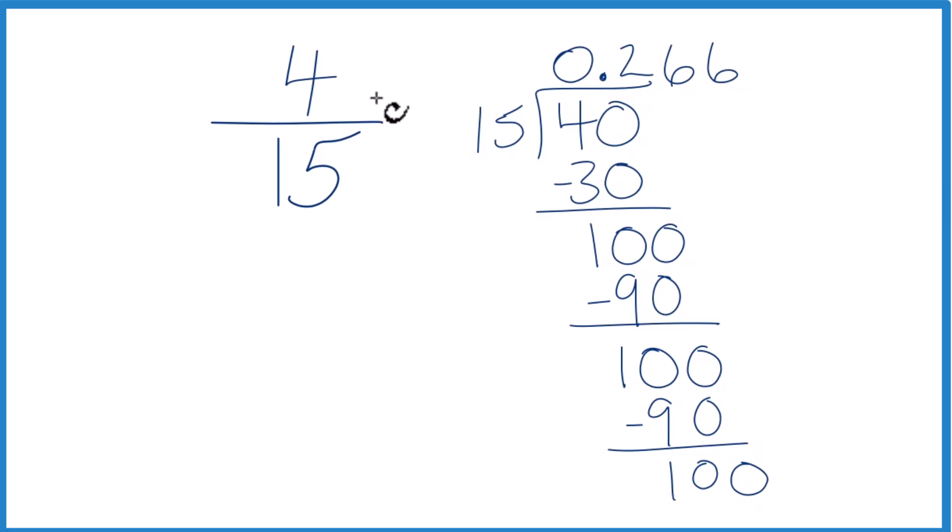So we could say that the fraction 4 fifteenths, that equals the decimal 0.26666. Or we could take these 6's that repeat here and just put a bar over the 6 here, call it 0.26 with the bar over it. That's the same thing as 4 fifteenths, the fraction.